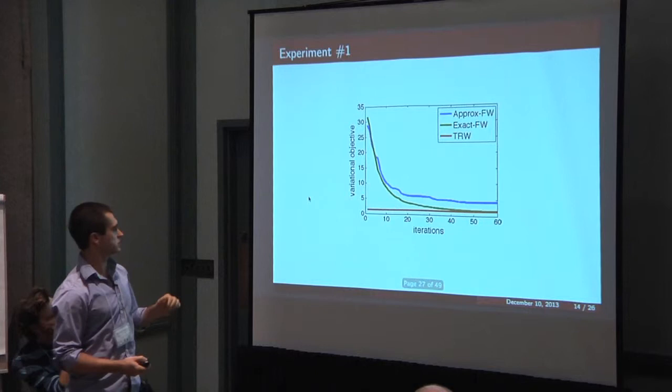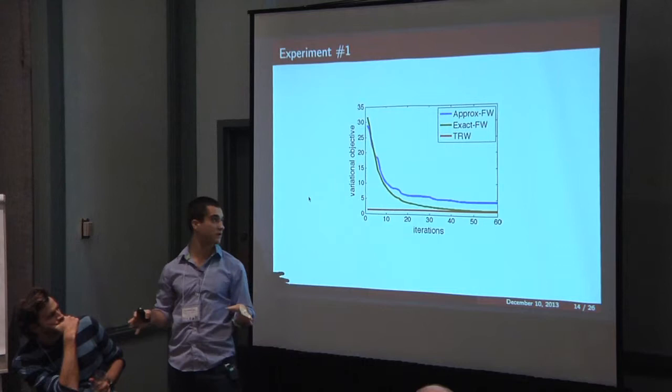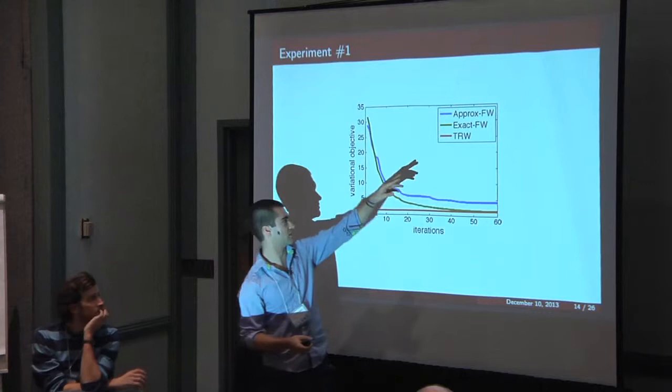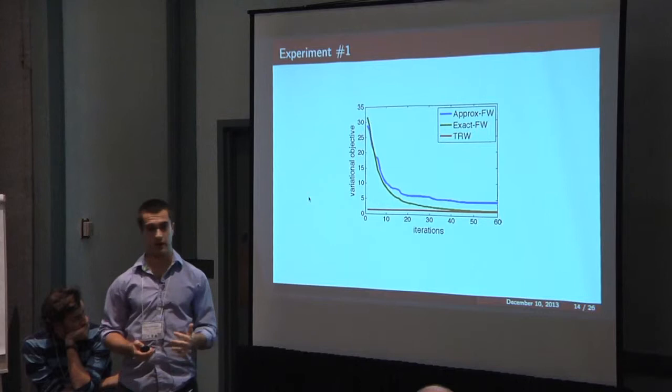In terms of results, this is just a simple run of the algorithm on a very simple Markov random field, synthetically generated. There are basically three stories in this plot. One is that the baseline algorithm, which is just this message passing algorithm TRW, is super fast and comparatively works really well. So I'm by no means suggesting that you use my algorithm right now for marginal inference. I'm using it as a proof of concept.